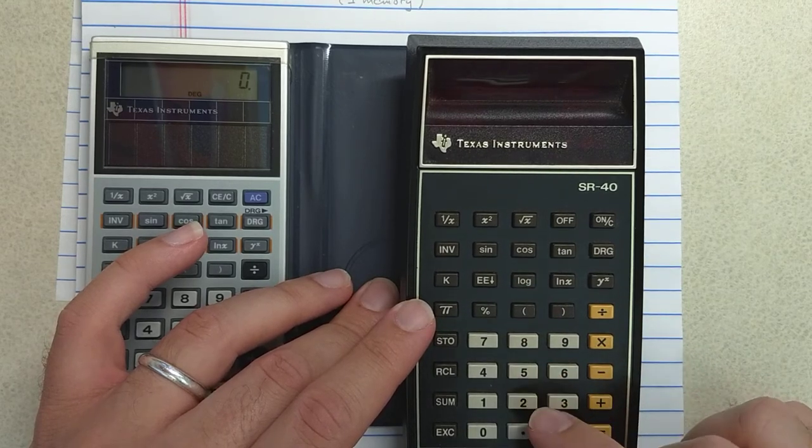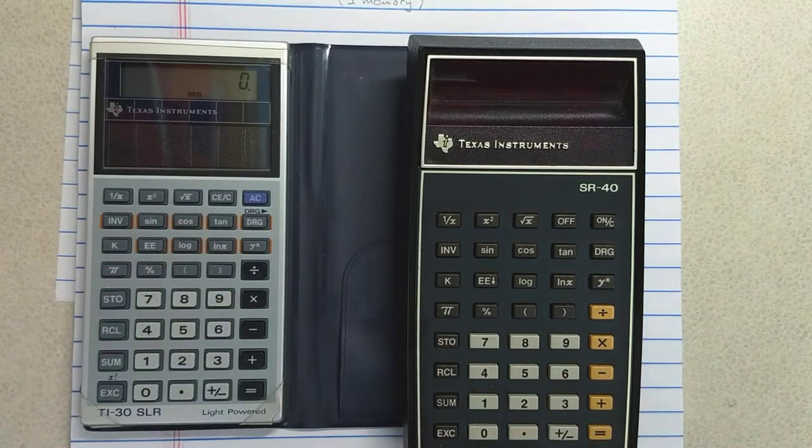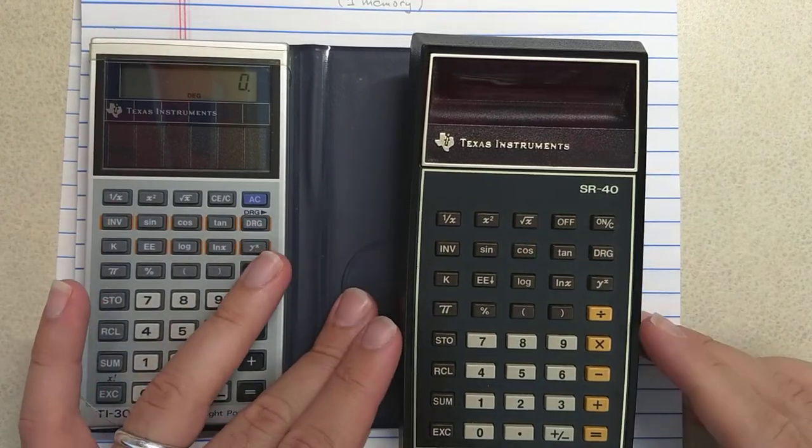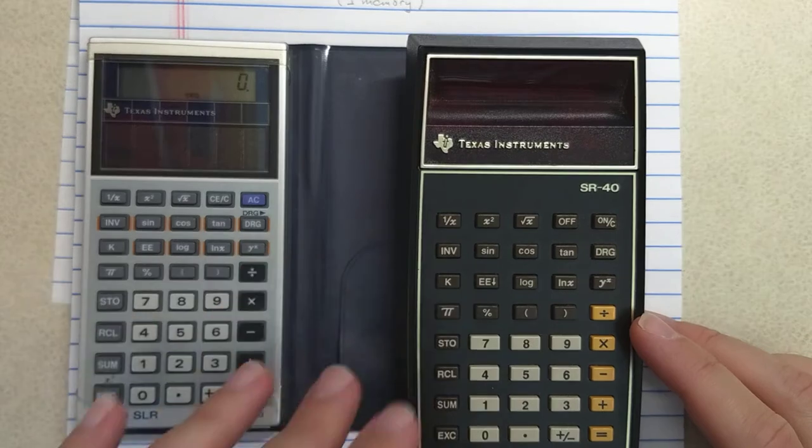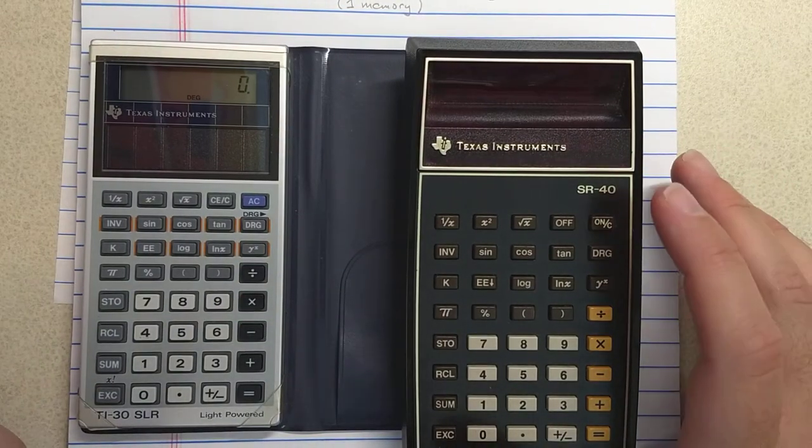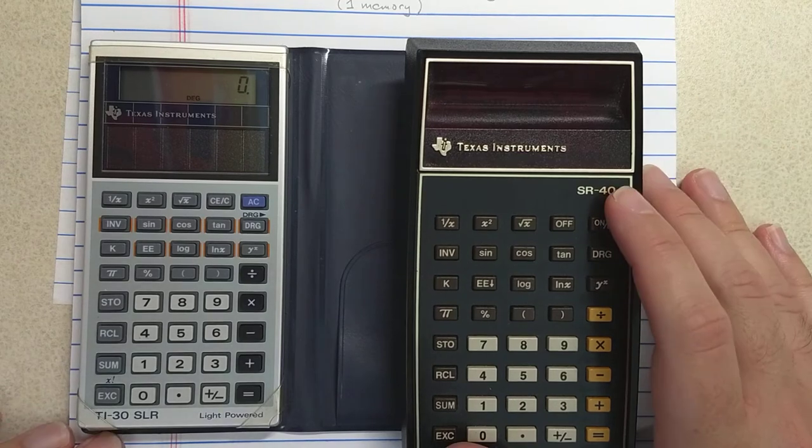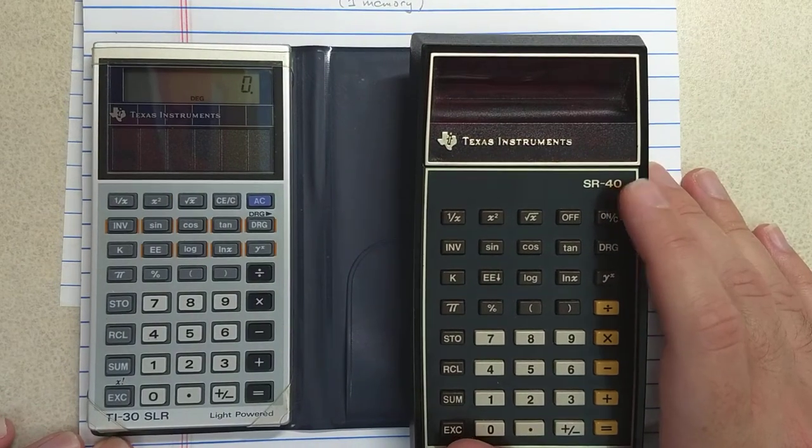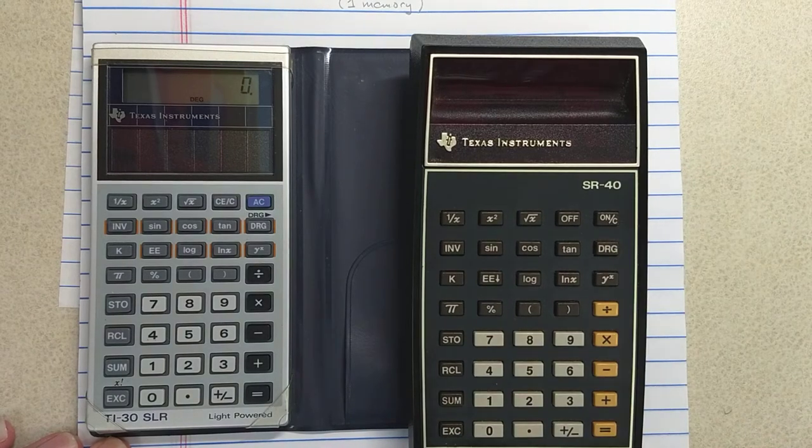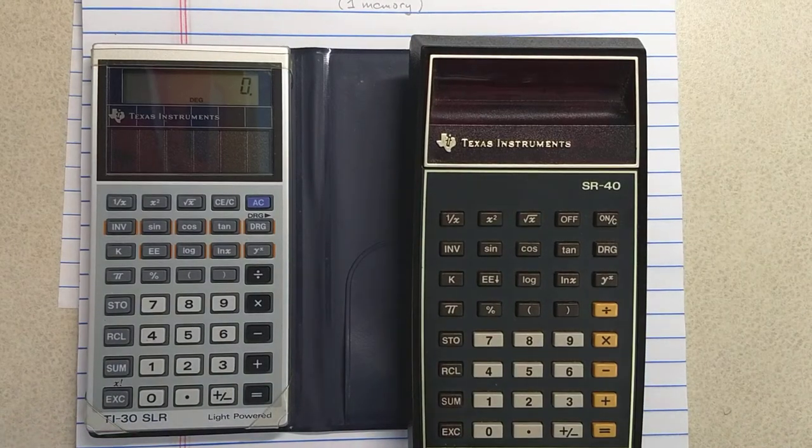The other difference is that the SR-40 has a different battery system than the TI-30. The TI-30 uses disposable 9V, I think. And the SR-40 comes with a rechargeable battery pack. Although I have a disposable 9V in this SR-40 because the battery packs are hard to find in good condition or rehabilitate.